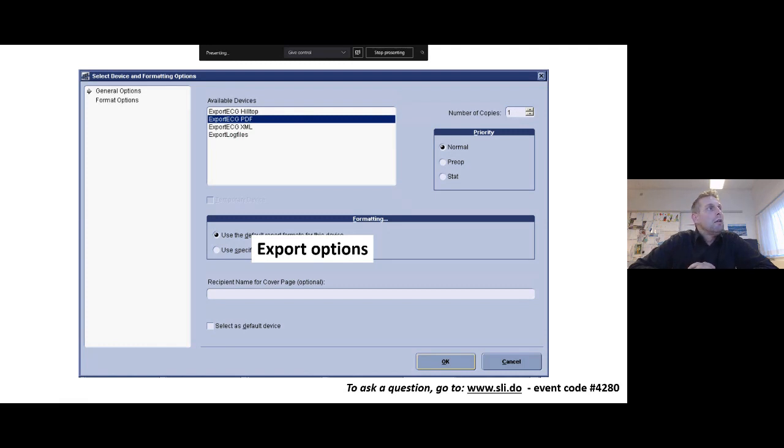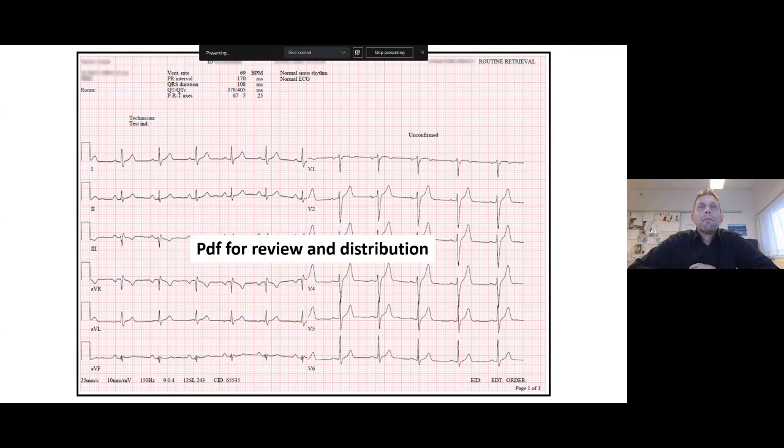So now we've come to what I think is one of the most powerful research features in MUSE, and that is the ability to export ECG in different formats, such as PDF format or XML format. Many times we will export PDF versions of the ECGs and then we will circulate them for review. Many times we will do measurements of specific intervals on these PDFs and we will then use those measurements to compare with the automatic 12 SL measurements.